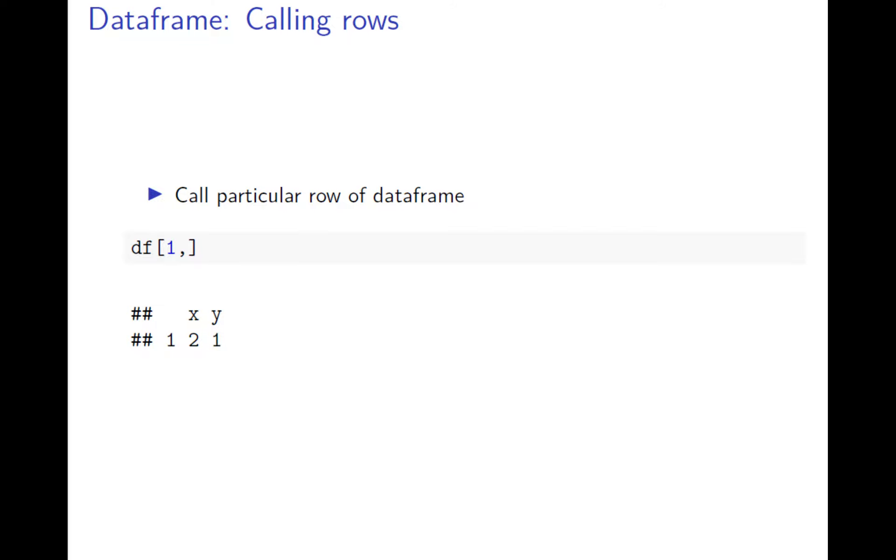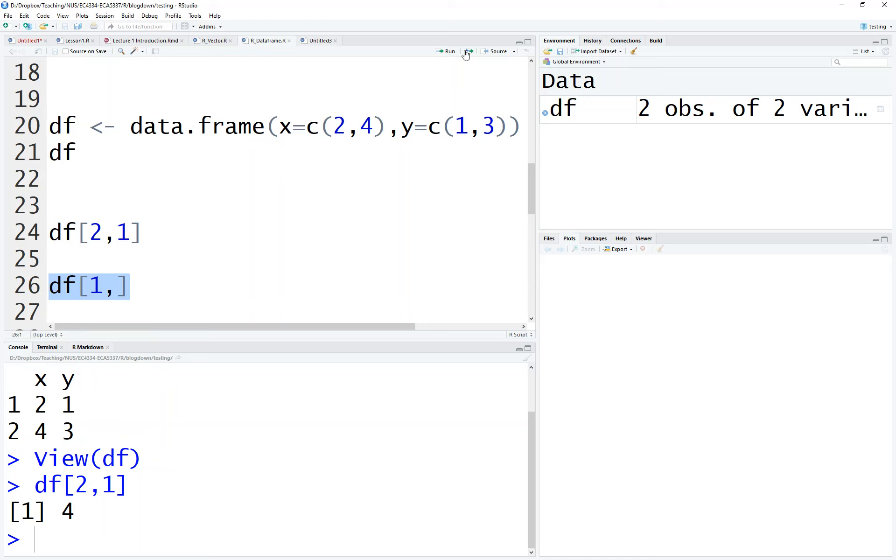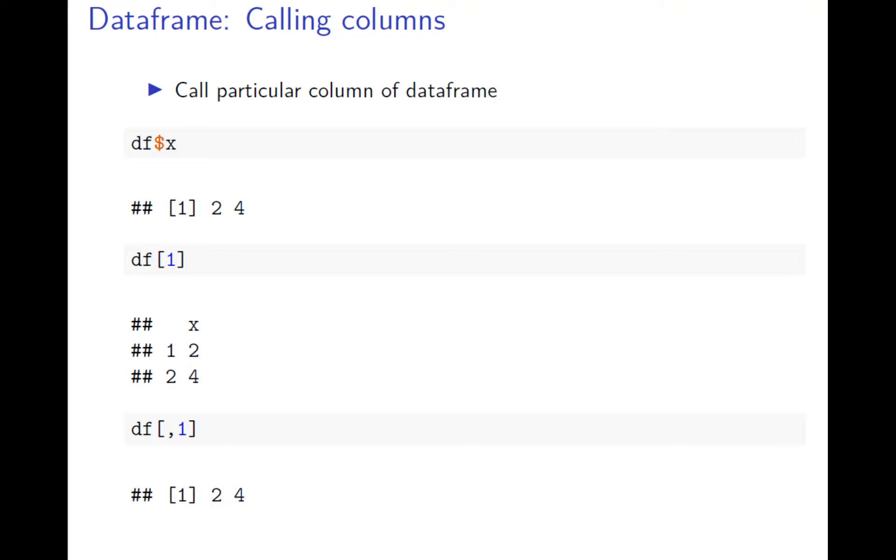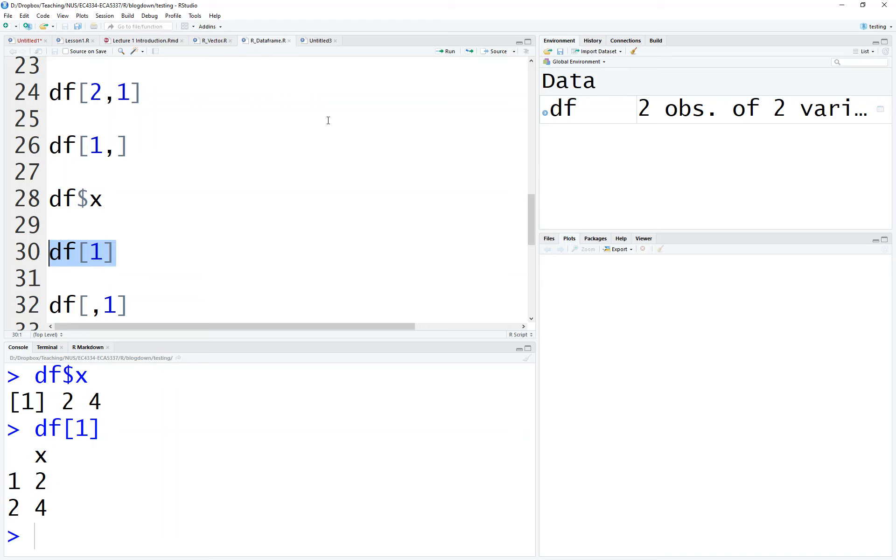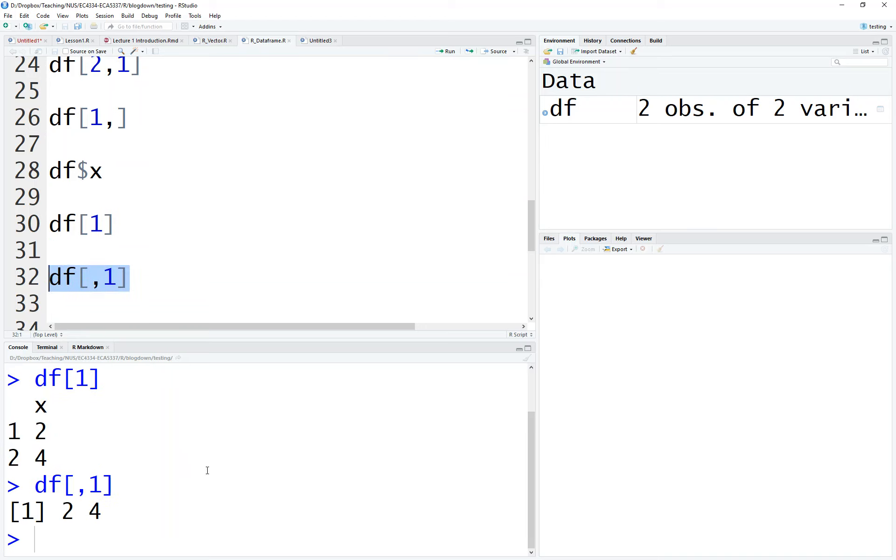If you want the first row, it's just one comma. One comma gives you the first row. The second row would be two comma. You can easily predict how to get a particular column. You can give the name using the dollar sign, or you can just do df[1] for the first column, or df[,1]. Because the row is not needed, you just leave it empty and this will give you the column.